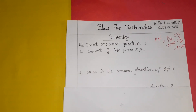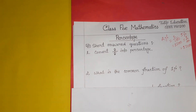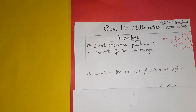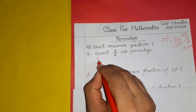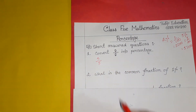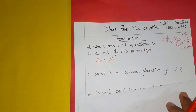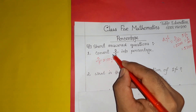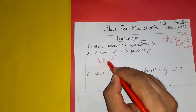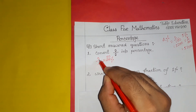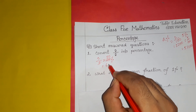First question: we will convert 3 divided by 5 into percentage. We take 3 by 5 and multiply by 100%. We can reduce the numbers — 100 divided by 5 gives 20, and 20 multiplied by 3 gives 60 percent.